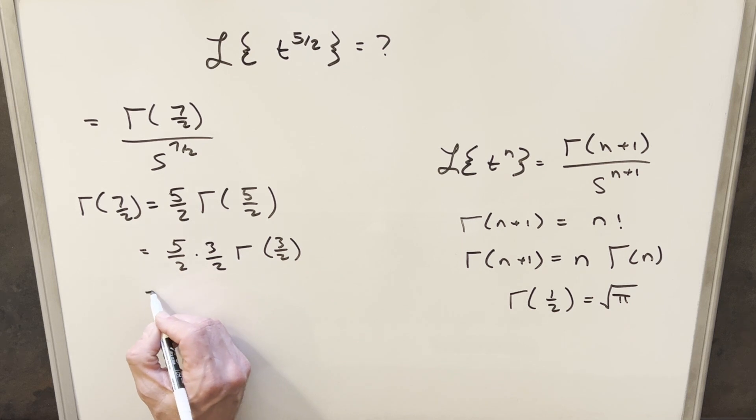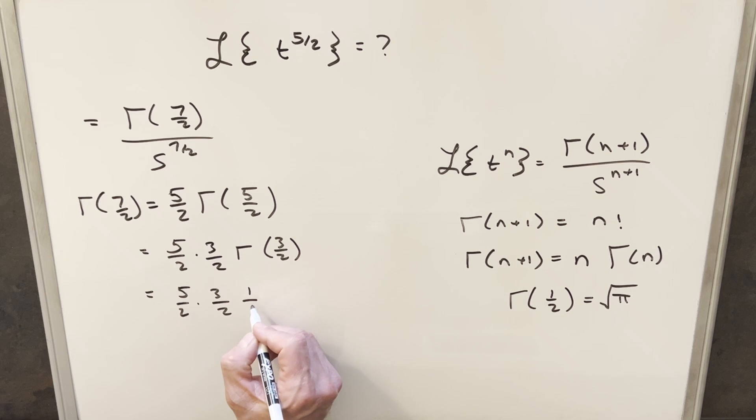And then doing it just one more time, we'll have 5 halves times 3 halves, but then I can rewrite this one here as 1 half times gamma of 1 half.